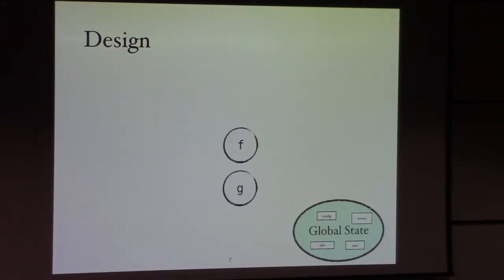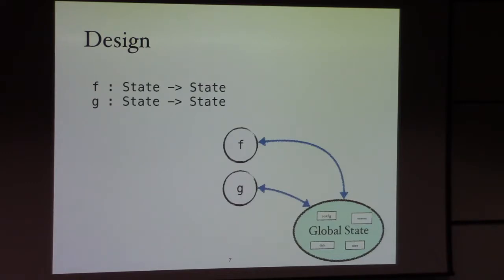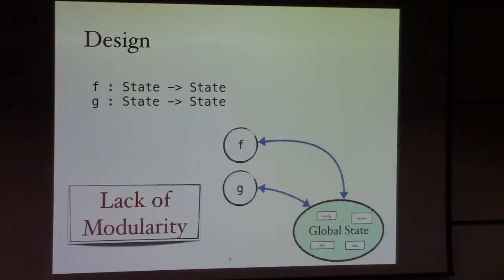We have functions M and G, and they take the state as input and produce the state as output. The type doesn't give us any information, and essentially every function can be given such a type signature. That totally breaks modularity.